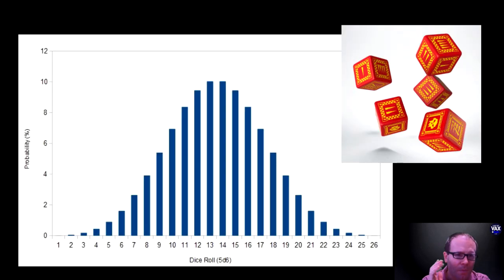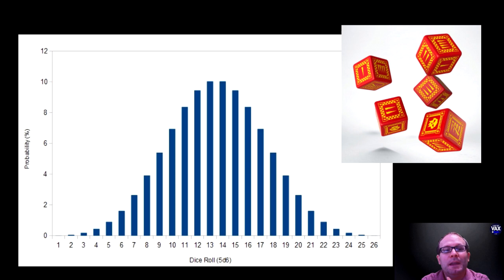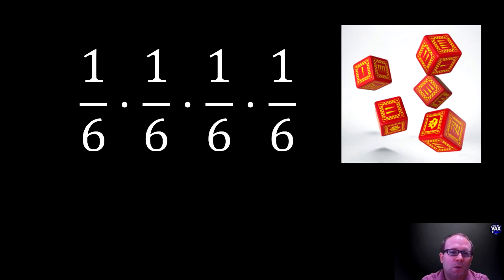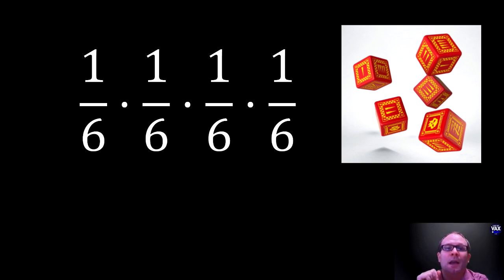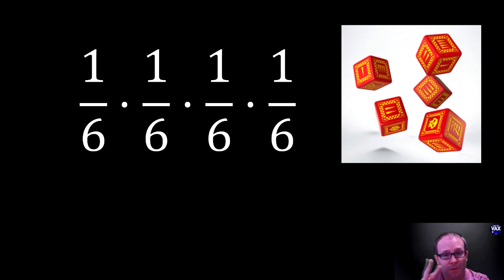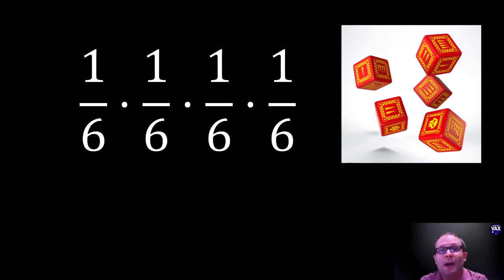One popular dice game in The Wheel of Time is called Crowns, where you roll five dice in an attempt to obtain a specific pattern. The biggest winning roll is five of a kind. We can calculate the probability of this roll based on the probability of four individual matches. Suppose we know the first roll is a four — the probability of rolling a four on the next die is one in six, and the same for each subsequent die. To get the probability of rolling all remaining dice as a four, we multiply one in six by itself four times, arriving at a very low probability of less than a tenth of a percent, or less than one out of every thousand rolls.